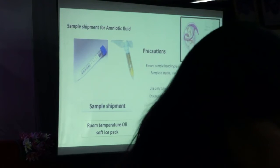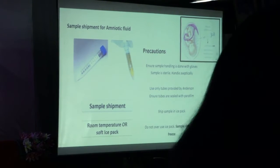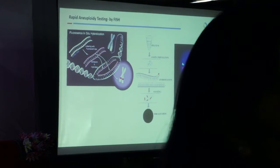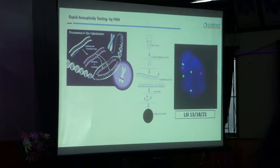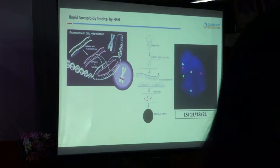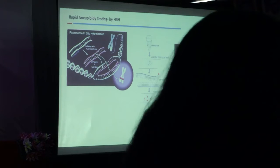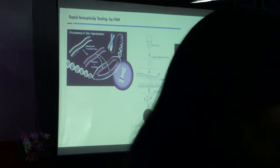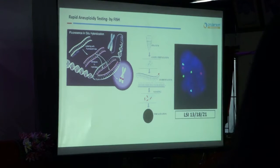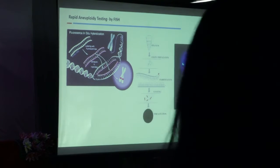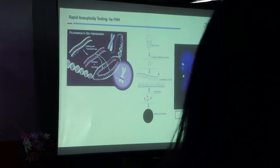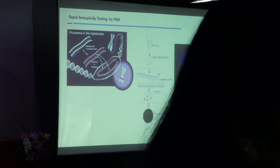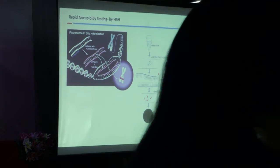To address the long wait, we developed rapid aneuploidy testing. It is called FISH — Fluorescent In-Situ Hybridization. Here, we have certain probes tagged with fluorescent dyes focused at particular chromosomes, added to a cell from the amniotic fluid. For example, chromosome 13 is tagged with green signal — two green signals means two copies. Chromosome 18 is tagged with red signal, and chromosome 21 is tagged with aqua signal. This way, we can diagnose whether these three chromosomes are in normal number within 24 hours.